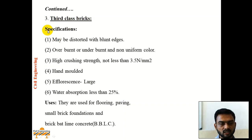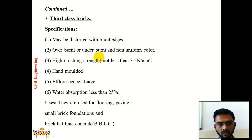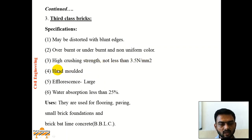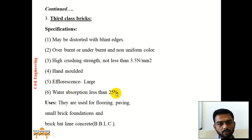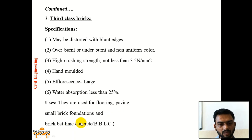3rd-class bricks may be distorted with blunt edges, overburnt or underburnt, and non-uniform in color. Crushing strength should be not less than 3.5 N/m². They may be hand molded, efflorescence large, and water absorption should be less than 25%. They are used for flooring, paving, small brick foundations, and brick back lime concrete.